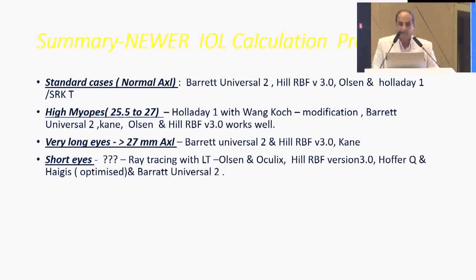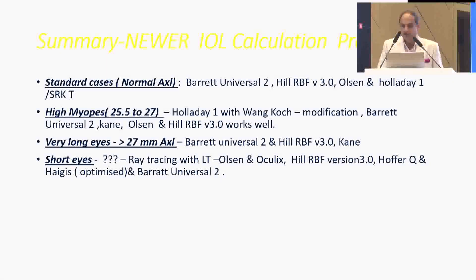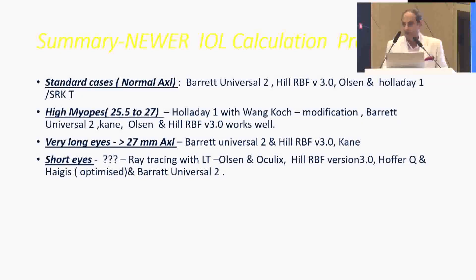In summary, the newer IOL calculation preferences: for standard normal axial length cases, Barret Universal 2, Hill RBF version 3.0, Olson, and Holladay 1 or SRK/T are good. For high myopes (24.5–27 mm), Holladay 1 with Wang-Koch or ULIB modification, Barret Universal 2, Kane, Olson, and Hill RBF version 3.0 work well. For very long eyes over 27 mm, Barret Universal 2, Hill RBF version 3.0, and Kane work well. For short eyes, ray tracing with ILT, Olson, and Aculix formula are recommended, along with Hill RBF version 3.0, Hoffer Q and Haigis optimized, and Barret Universal 2. Thank you very much.